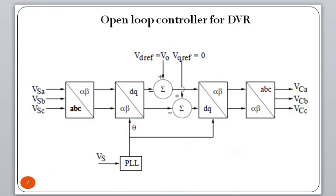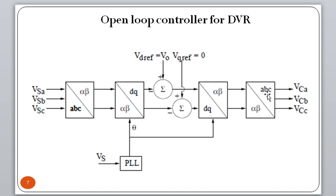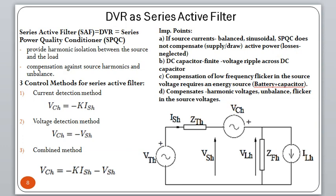For the DVR open-loop controller: the three source voltages are transformed from ABC domain to the alpha-beta domain using the Clark transformation, then converted to the dq0 domain. A PLL provides the theta signal. Reference voltage signals are derived in the dq domain, and the synchronous reference frame is used. Then, using inverse Clark transformation, we go back to alpha-beta and then to ABC, giving the compensator ABC voltage signals needed to generate gate signals.